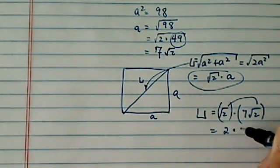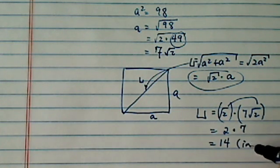Radical 2 times radical 2 gives you 2, so the answer is 14 inches.